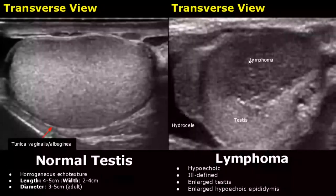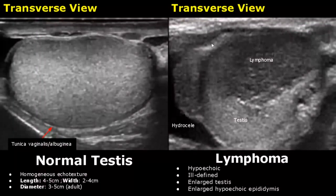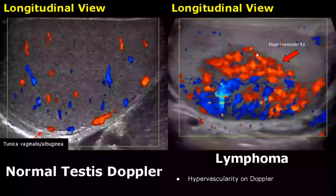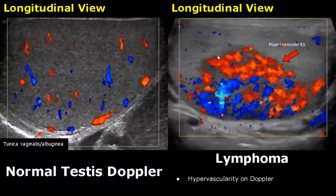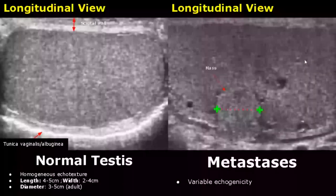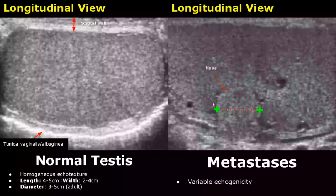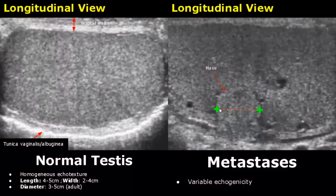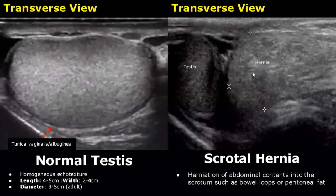Lymphoma is a testicular malignancy which is not very common. There will be a hypoechoic ill-defined mass and both the testis and epididymis will be enlarged. On color Doppler there will be hypervascularity inside the mass. Metastasis to testis is very rare; it has variable echogenicity and can be bilateral. Here is an image of scrotal hernia — there is herniation of abdominal contents in the scrotal sac, usually peritoneal fat or bowel loops. Here we see peritoneal fat next to the testis in the scrotal sac.